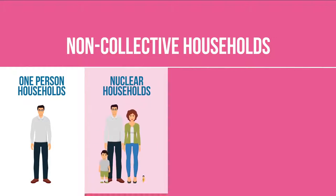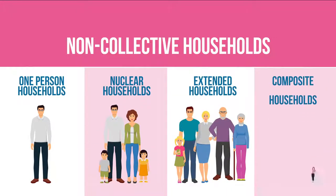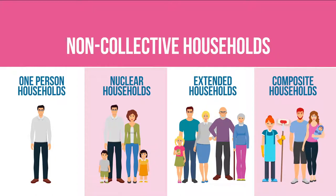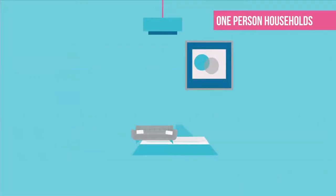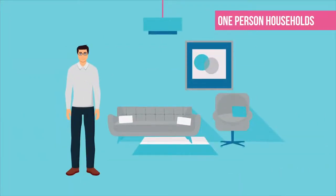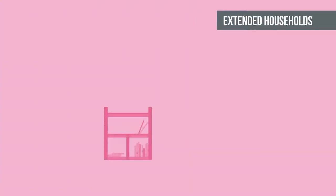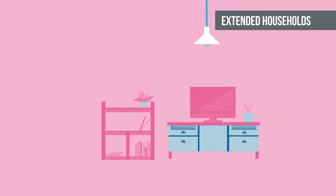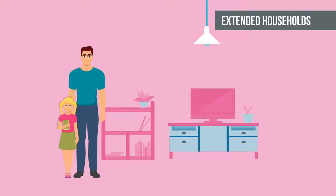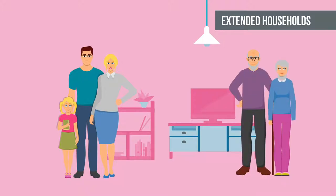There are 4 types of non-collective households: 1-person households, nuclear households, extended households, and composite households. 1-person households consist of 1 person living by himself or herself. Nuclear households consist of a single conjugal family nucleus, such as a married couple with children. Extended households consist of persons related to each other living together in the same household, but not forming a single nuclear family.